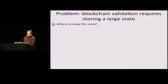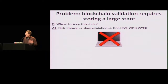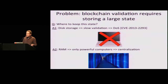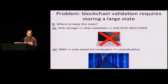So the question is: where do you keep this key-value store? There are two answers. You keep it on disk, which gives you slow validation — that has actually been used for denial-of-service attacks, forcing you to do disk seeks. A weak laptop isn't going to be able to do this. The other answer is that you keep it in RAM because you've bought a lot of RAM, which limits the ability of weak devices to validate it, and you get more centralization of a cryptocurrency — which defeats the democratizing purpose of cryptocurrencies. So we'd like to enable validation on weak devices.